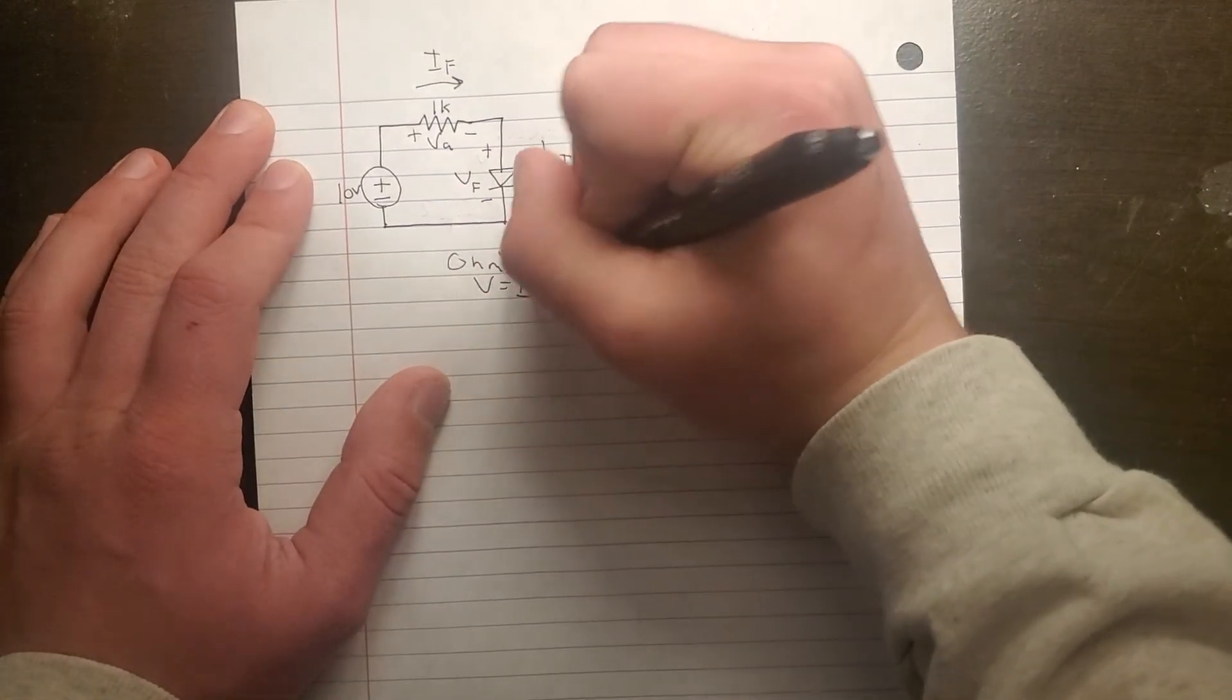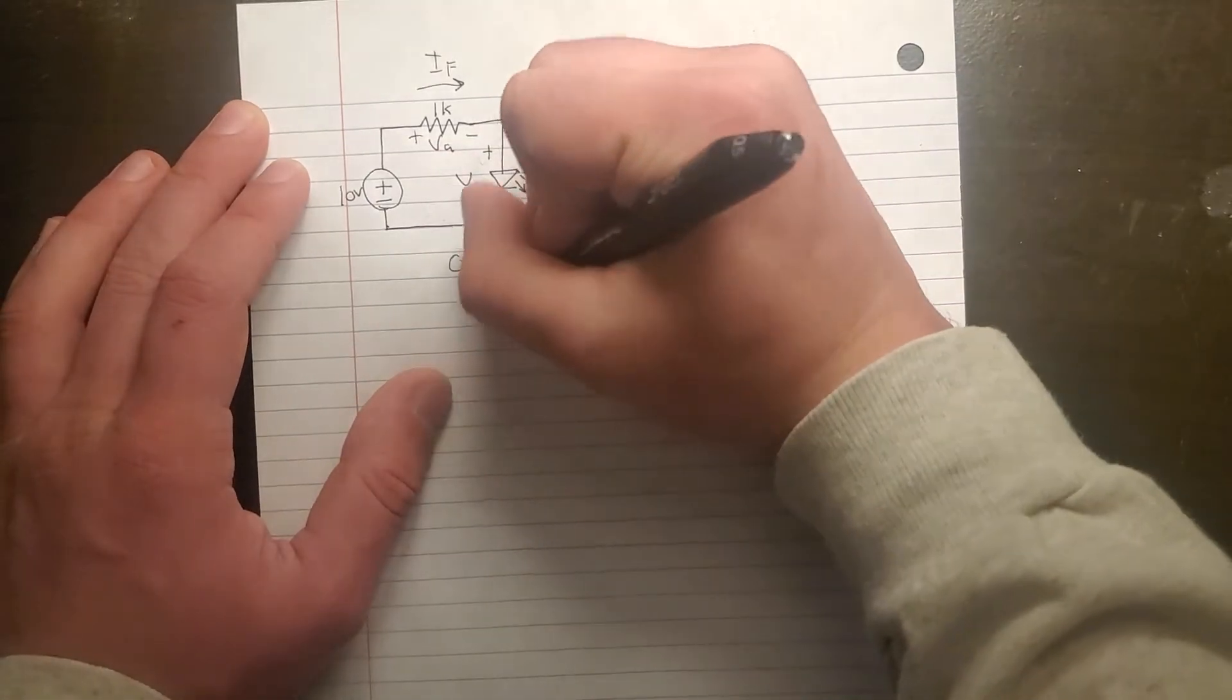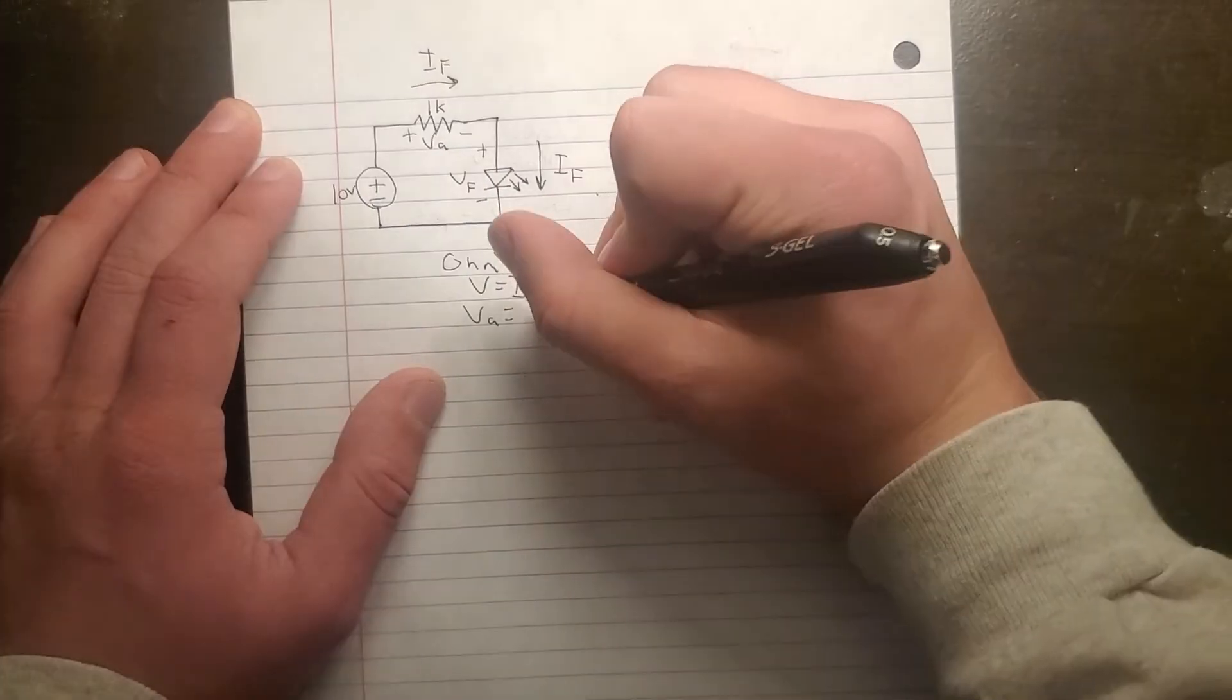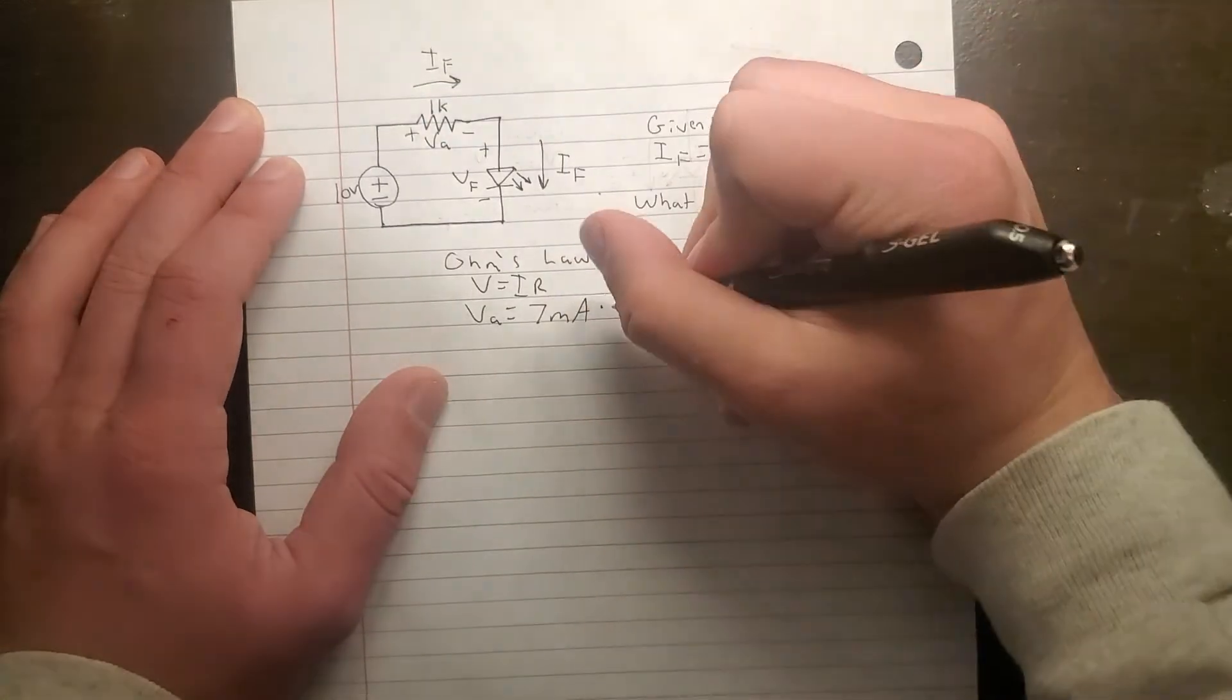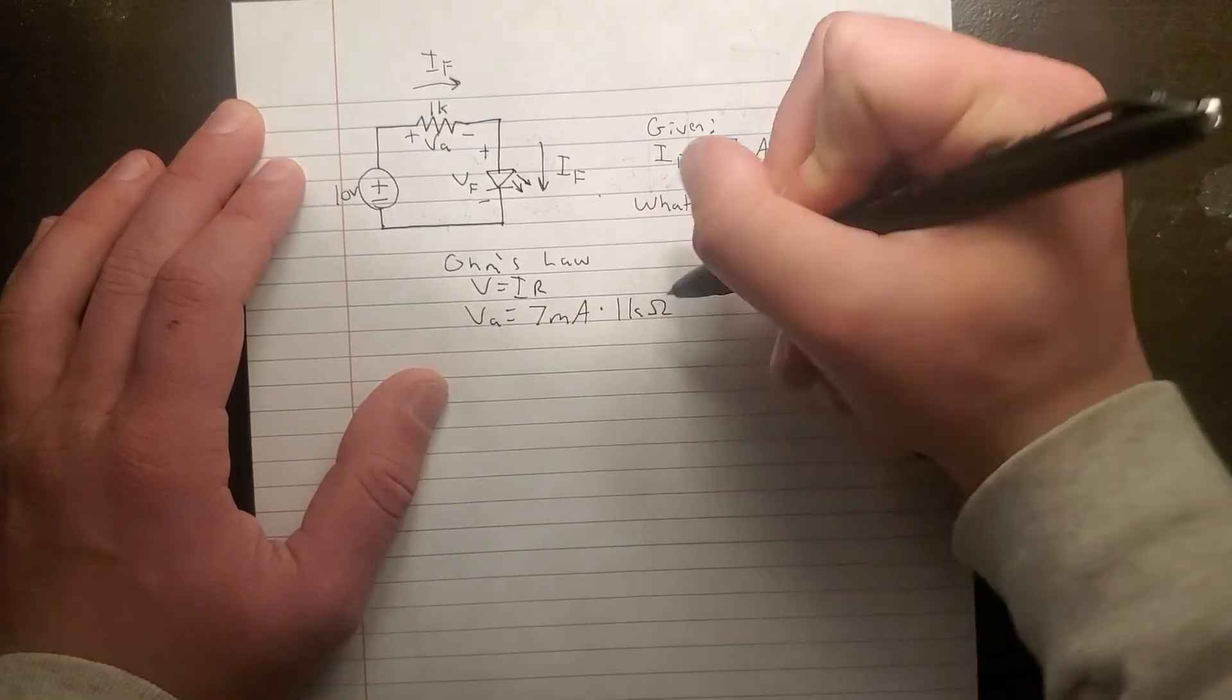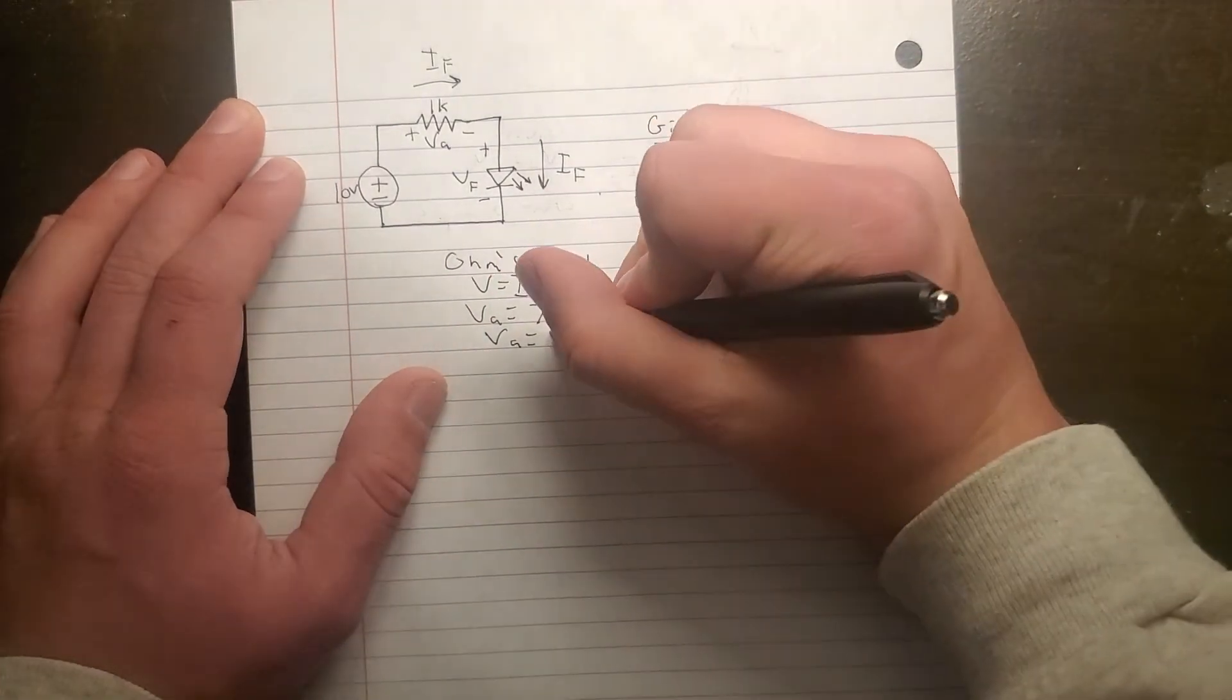V equals IR. Pound that into your head. Well, that means that VA is equal to 7 mA times 1K Ohm, or VA is equal to 7 volts.